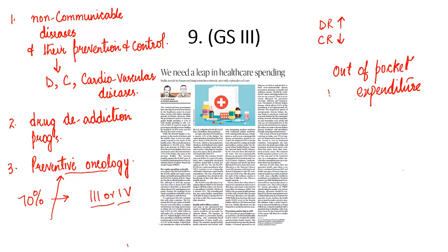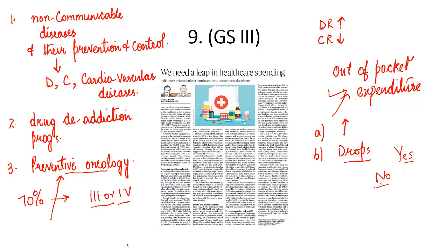Out-of-pocket expenditure also increases because insurance schemes do not cover all expenses. Patients or their families either face increased expenditure on illness or drop out of treatment entirely. The article also argues: does increase in GDP guarantee health? No. But does improvement in health guarantee increase in GDP? Yes — because better health means better productivity, which means better GDP. That is the crux of this article.